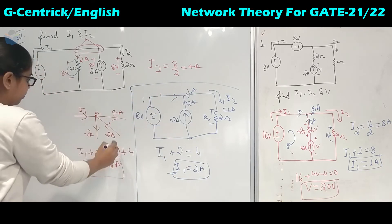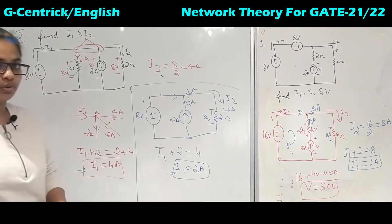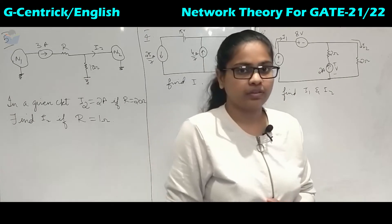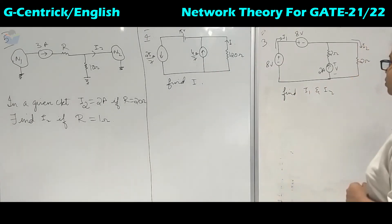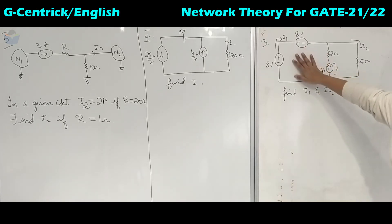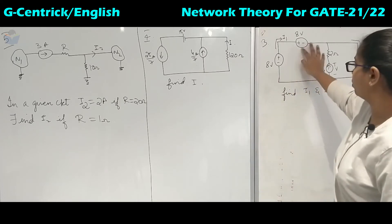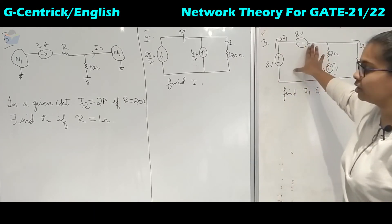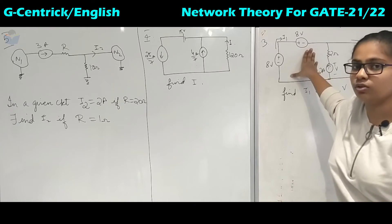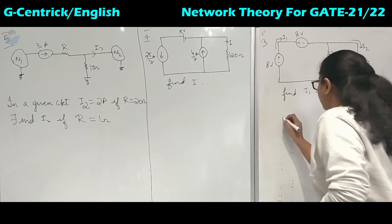We will get the same I2 value of 4 amperes either way. Now coming to some more problems: they have again asked us to find I1, I2 and V. This is similar to the first problem, but the difference is the polarities are different. Going around, you get plus 8 minus 8 volts, so there will be no voltage — it acts as a short circuit. We will redraw this circuit.